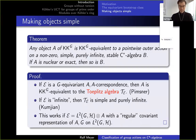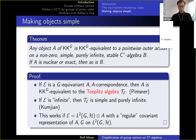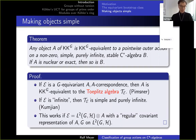The next topic is making objects in the bootstrap class simple. Any object of KKG is KKG-equivalent to another group action on a C*-algebra which is non-zero, purely infinite, simple, stable, and the action can also be made pointwise outer — meaning all group elements act by an outer automorphism. Furthermore if A was nuclear then you can arrange that this new C*-algebra is also nuclear, or if you start with something exact it remains exact.